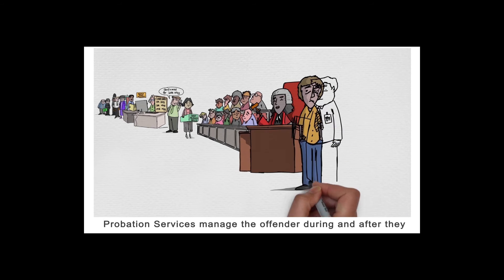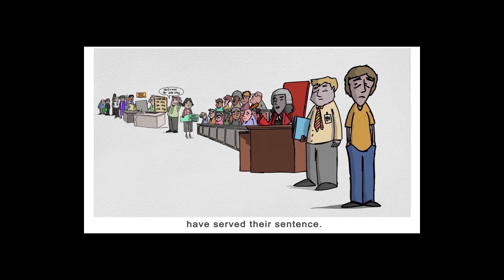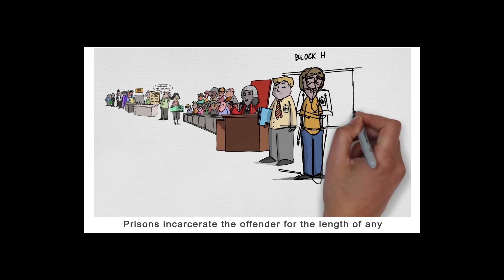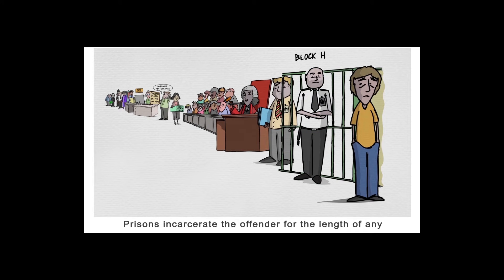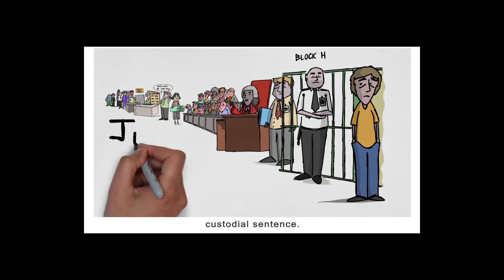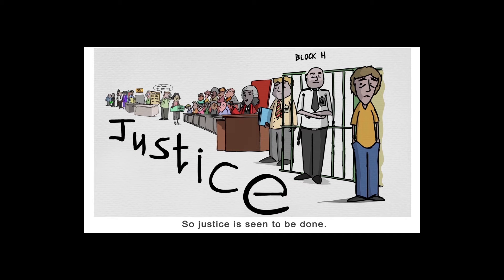Probation services manage the offender during and after they have served their sentence. Prisons incarcerate the offender for the length of any custodial sentence. So, justice is seen to be done.